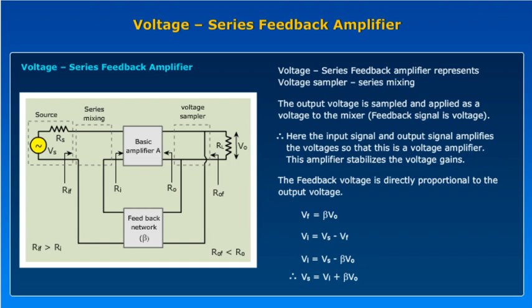First of all, we discuss about the voltage series feedback amplifier input and output resistances. This diagram shows that voltage series feedback amplifier. In this feedback amplifier, the input mixing is the series mixing and output is the voltage sampler. The voltage series feedback amplifier represents the voltage sampler as a series mixing and the output voltage is sampled and applied as a voltage to the mixer.